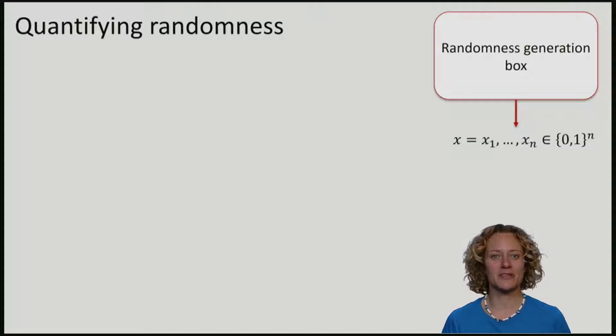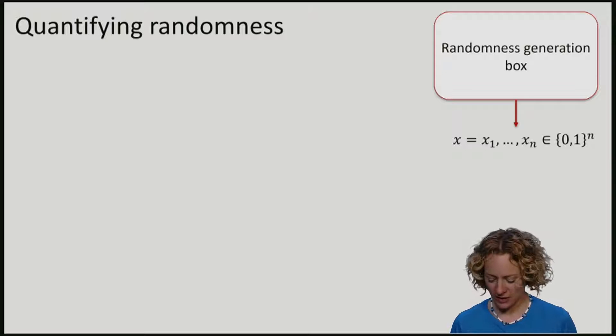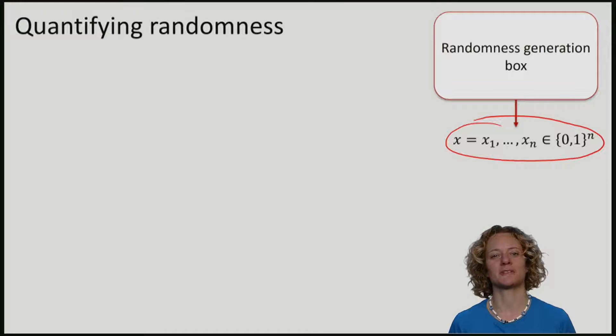To make it simple, I first want to consider the case where there is no eavesdropper Eve. We are just interested in a classical string x generated by a randomness generation box. I push the button of this box and it generates a string x1 up to xn.